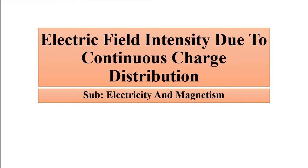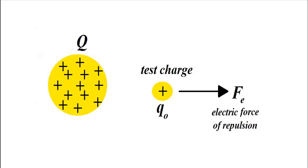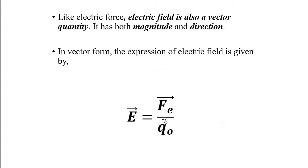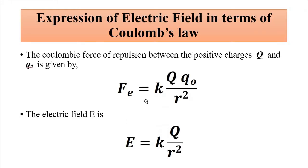We have already discussed Coulomb's law and the Coulombic force exerted by a group of charges or isolated point charges located at different points, and how they produce the electric field. The electric field is the Coulombic force divided by the value of the test charge itself. The general expression of electric field in terms of Coulomb's law is E = (1/4πε₀) × (Q/r²) r̂.